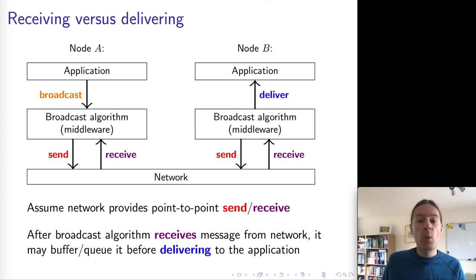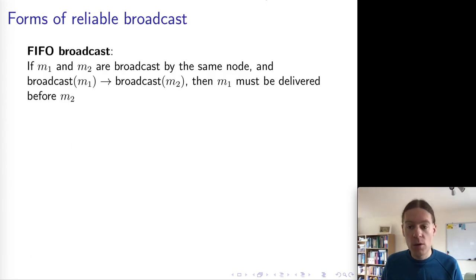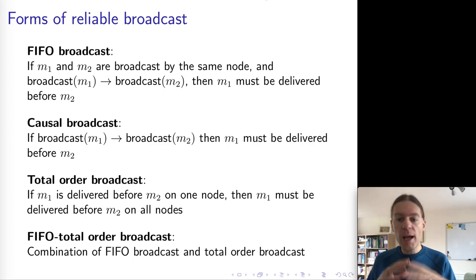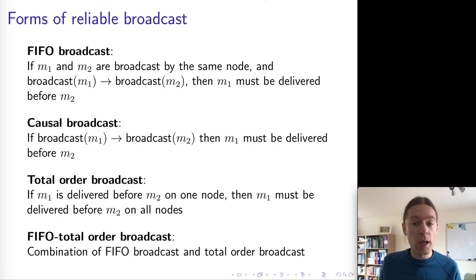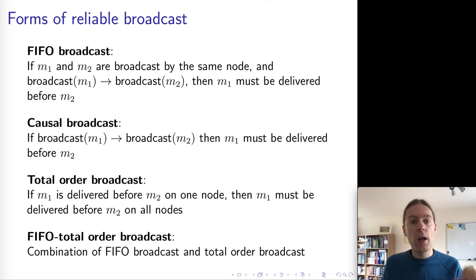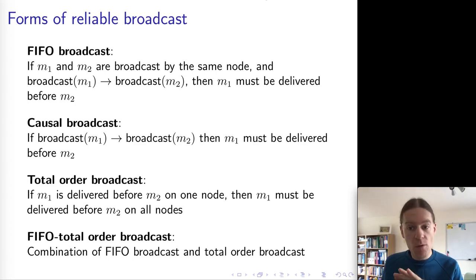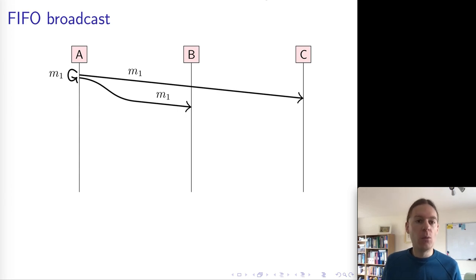We are now going to look at a couple of different broadcast abstractions. These are all forms of reliable broadcast, so we're assuming we have a mechanism for retransmission which ensures that all messages eventually get through. We want to distinguish different types of broadcasts based on the order in which messages get delivered. The first one is FIFO broadcast. In FIFO broadcast, the ordering property is that if two messages are broadcast by the same node, then all nodes will deliver those messages in the same order as they were broadcast. But for messages broadcast by two different nodes, there's no guarantee about the order in which they might arrive.